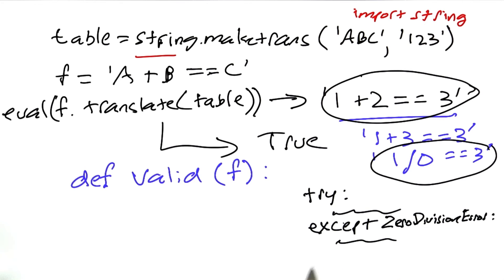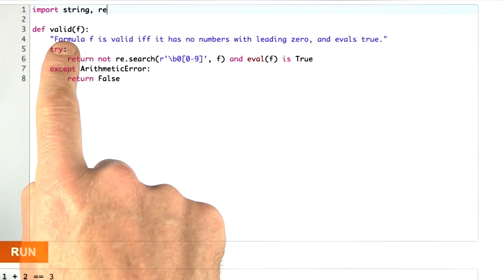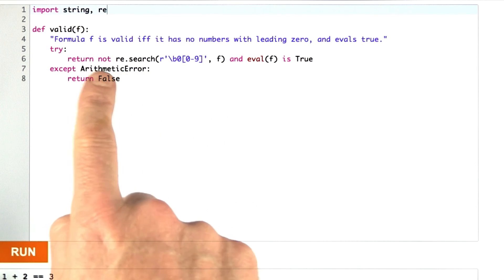You should also think about if there's anything else that can go wrong within the execution of valid. Here's my version of the solution. So in defining valid, takes a filled in formula f, and it's going to return true.